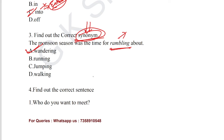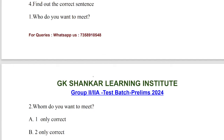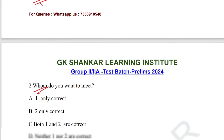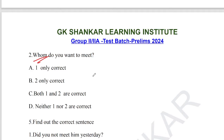Question number 4: find out the correct sentence. Statement 1: 'Who do you want to meet?' Statement 2: 'Whom do you want to meet?' 'Whom do you want to meet' is the correct usage. Option B, statement 2 only correct, is the answer for question number 4.